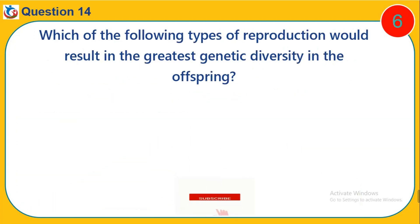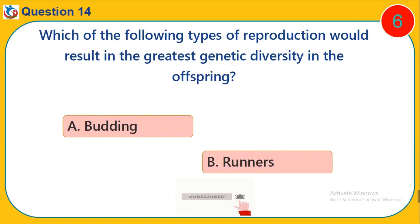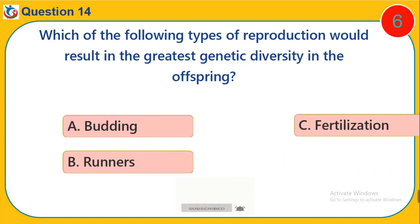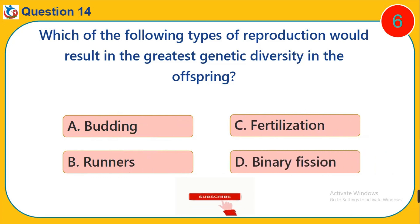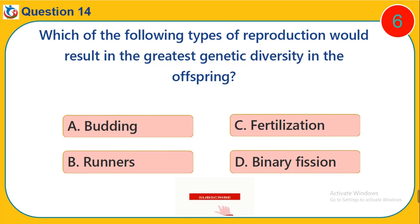Question 14. Which of the following types of reproduction would result in the greatest genetic diversity in the offspring? A. Budding. B. Runners. C. Fertilization. D. Binary Fission.